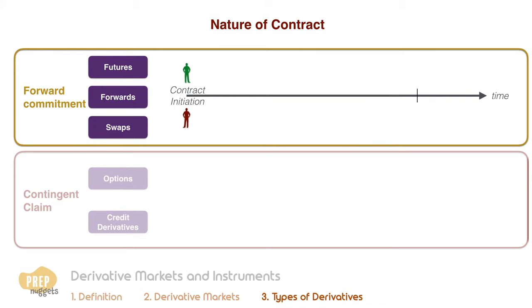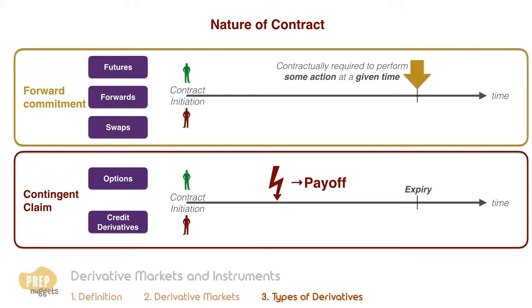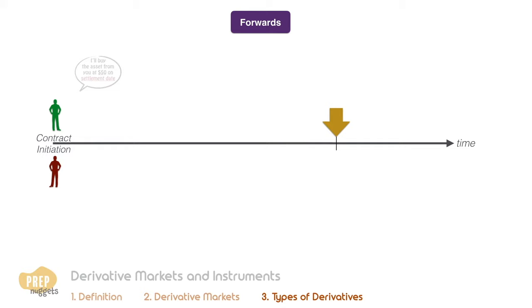A forward commitment is a contract where the parties are required to perform some action at a given time. A contingent claim consists of a payoff which is only claimable if a particular event happens before the expiry of the contract. We shall go into an introduction of each of these classes of derivatives, which will explain why forwards, futures and swaps are forward commitment contracts while options and credit derivatives are contingent claim contracts.